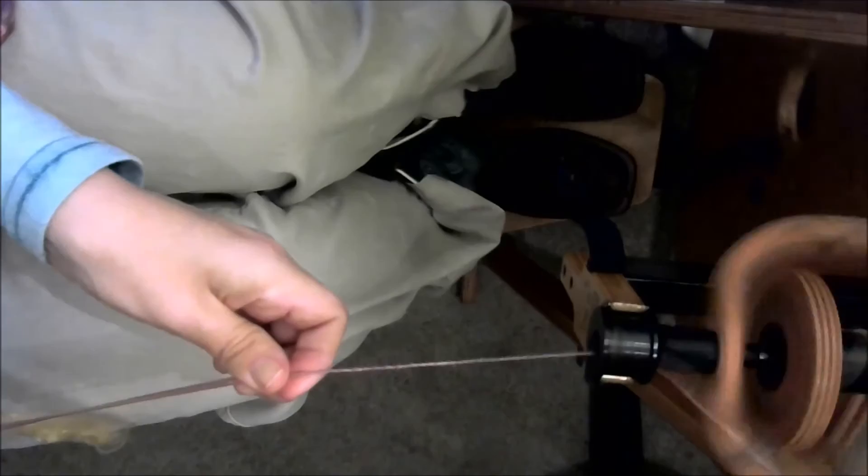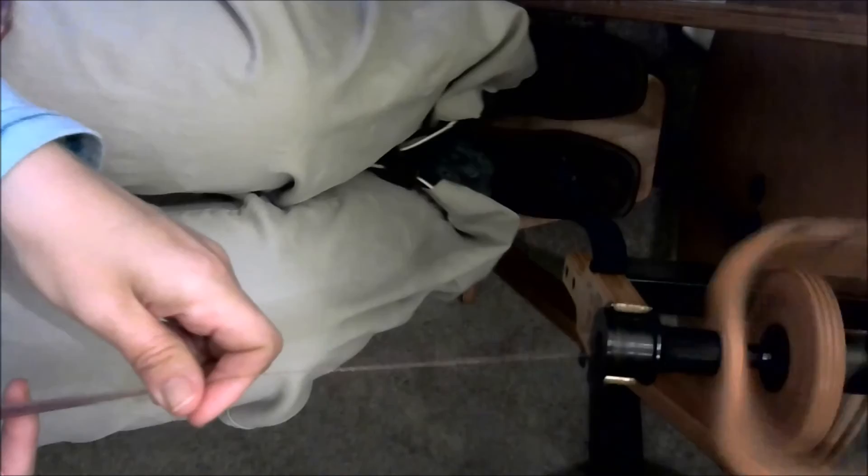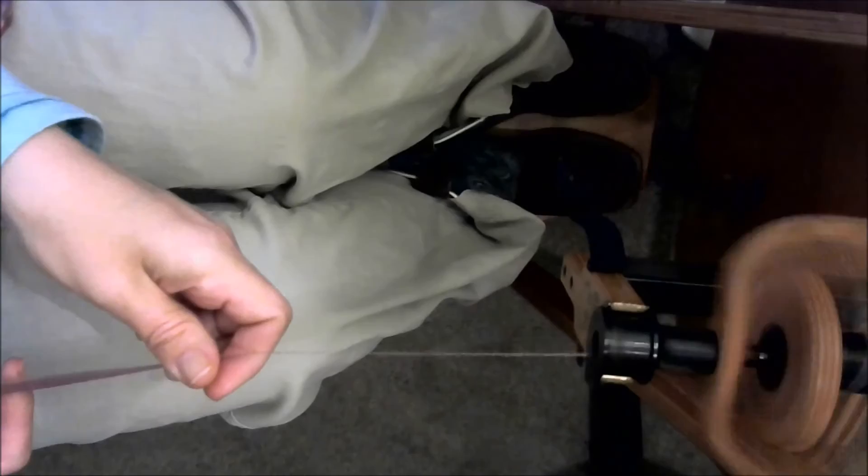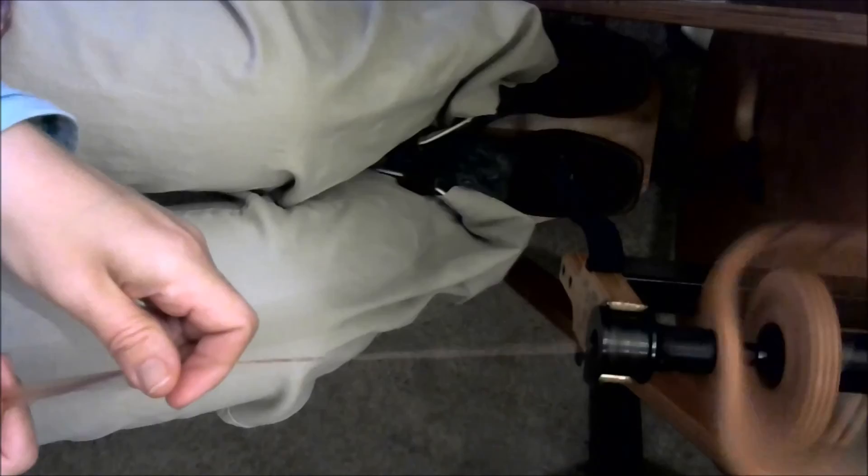I either use a forward draw or a backward draw, you know it ends up kind of the same thing, but a short draw works best. Think of it like an inchworm: inch, inch, inch, inch. There you go. I'm going to tell you that spinning silk, spinning a fine single, is easy. It is easy once you've done all the right prep work. It's when you're fighting your wheel that it's hard.